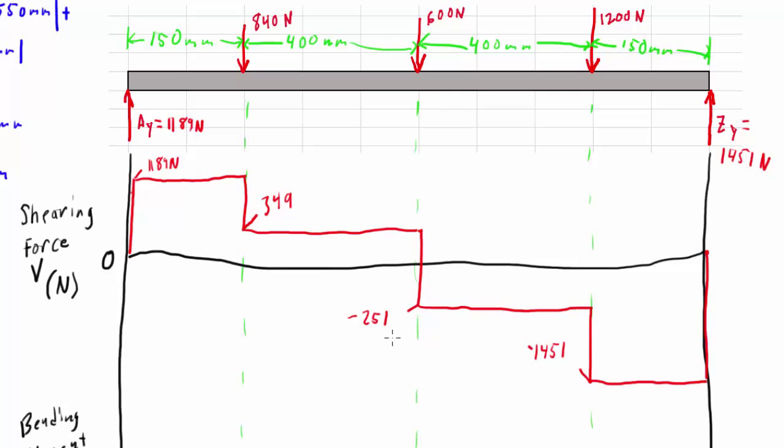So last for our shear force diagram is to label the maximum shear force. So our Vmax is, in this case, it's the 1451 because we just care about the absolute value. So it's 1451 Newtons.